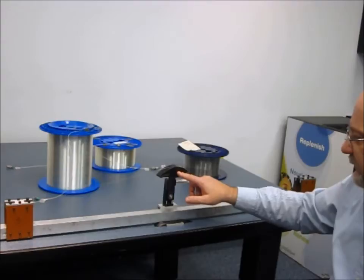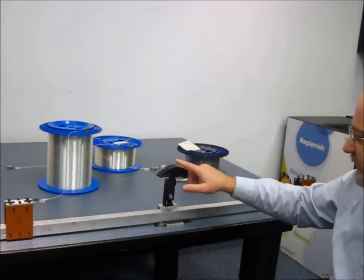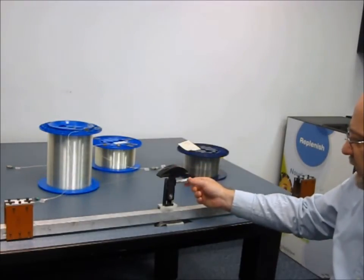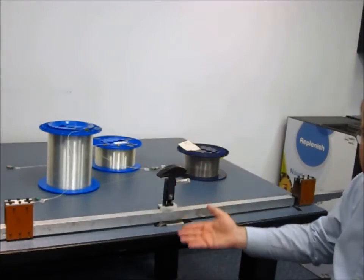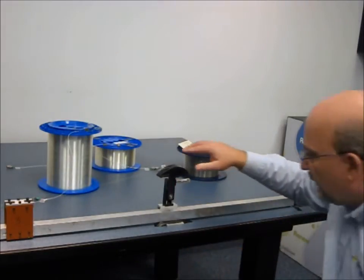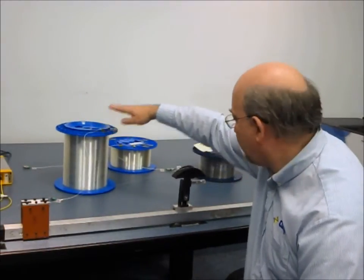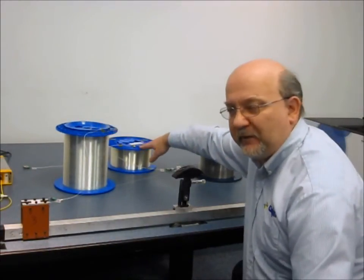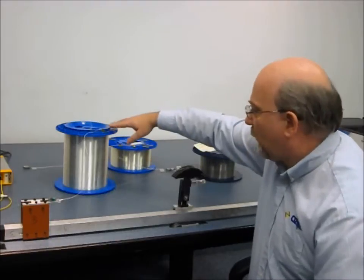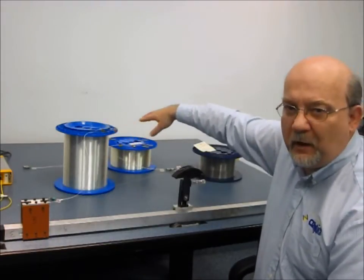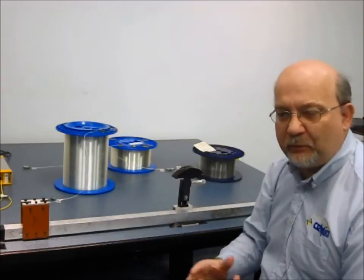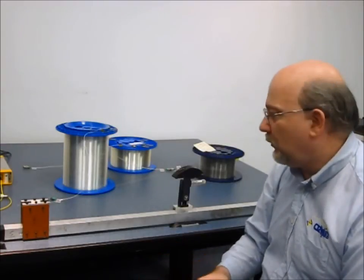We can adjust how much the branch presses against the fiber by adjusting this dial, which raises and lowers it. This fiber is connected to a large reel of fiber here, and another reel of fiber here, totaling about 16 kilometers worth of fiber, to simulate something approaching what would occur in the real world.